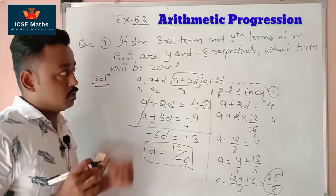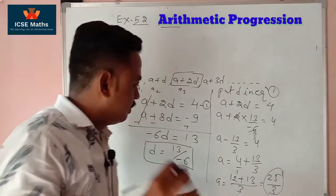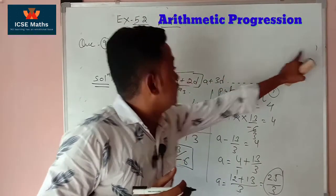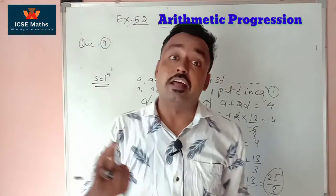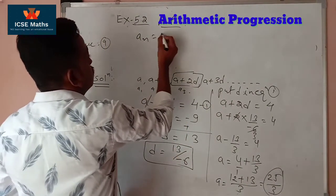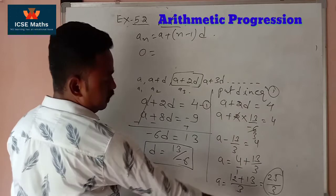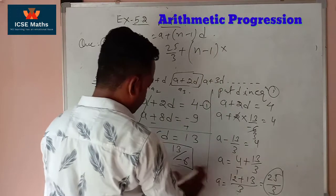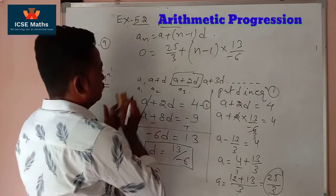Now we have the value of both a and d. The question asks which term will be zero, meaning aₙ = 0 and we need to find n. Using the formula aₙ = a + (n-1)×d, we substitute: 0 = 25/3 + (n-1) × (-13/6).